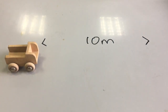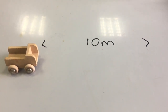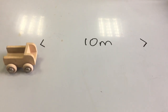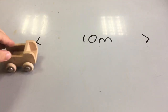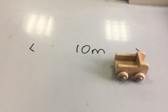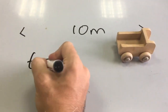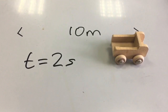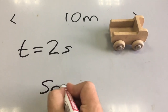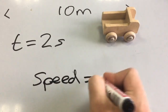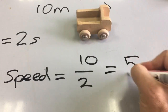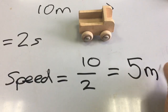We can see this quite easily if we have a vehicle which travels 10 meters. If it travels 10 meters in two seconds, then time is two seconds and so the speed is 10 divided by two, which is five meters per second.